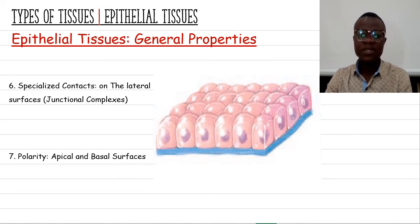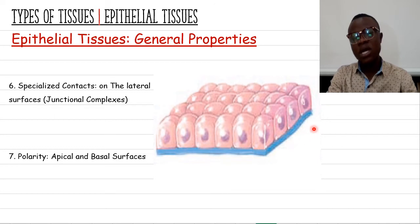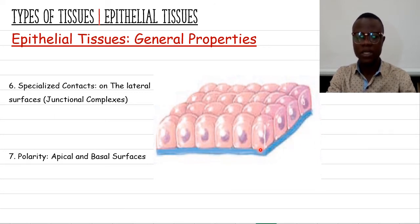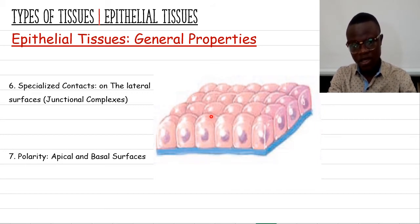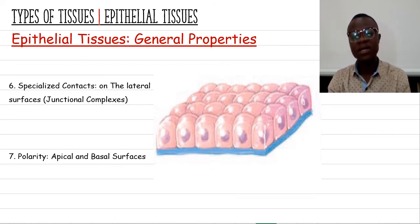Lastly, epithelial cells have both a basal surface and an apical surface. The basal surface is primarily formed by the basal lamina, contributed to by both the connective tissue and the epithelial tissue. At the apical surface there are modifications — such as cilia, stereocilia, or other forms — that aid in function, as we will see in subsequent tutorials.